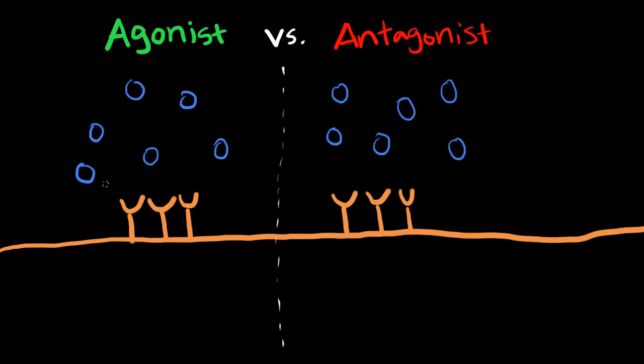When studying pharmacology, you might come across these two terms, which are agonist and antagonist. So what exactly are they?